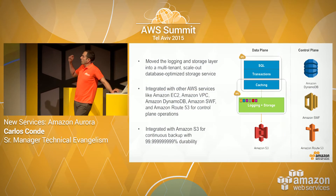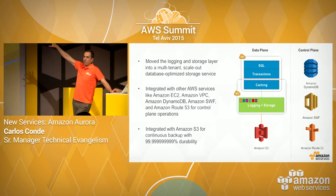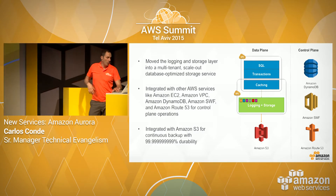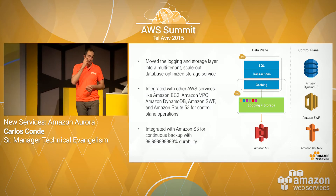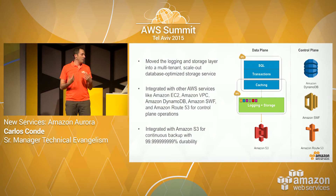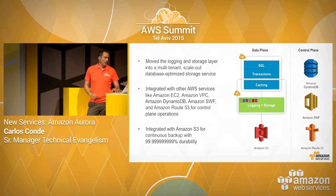To give you more details about the underlying architecture of Aurora, basically what we extracted is the storage, the logging, and the caching mechanism, which we distributed on multiple nodes. The rest of Aurora itself is built on other Amazon Web Services components, such as S3 for the replication.